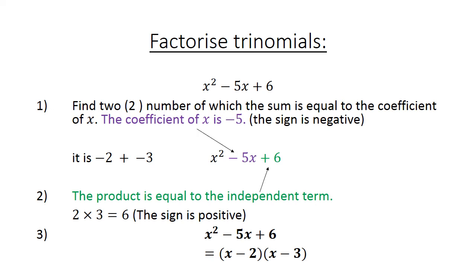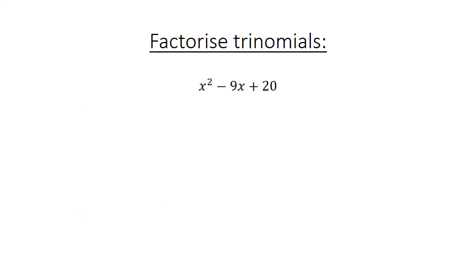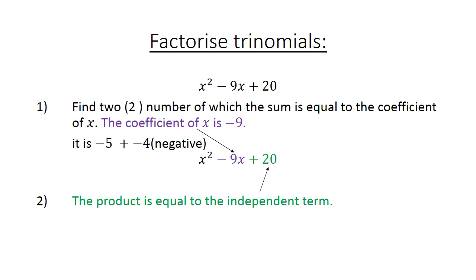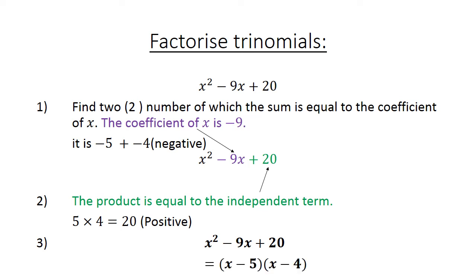The coefficient is negative 5 and the independent term is positive 6. Another example: x squared minus 9x plus 20. Find two numbers whose sum equals the coefficient of x, which is negative 9: that is negative 5 plus negative 4. The product must equal the independent term: 5 times 4 equals 20, which is positive because 20 is positive. Factorizing: x squared minus 9x plus 20 equals x minus 5, in brackets, times x minus 4.